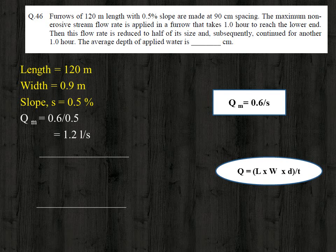For the first one hour, Qm = 1.2 liter/second = 1.2 × 10⁻³ m³/s. Converting time: 1 hour = 3600 seconds. Substituting into d = Q × t / (L × W): d1 = (1.2 × 10⁻³ × 3600 × 1) / (120 × 0.9) = 0.04 meter.